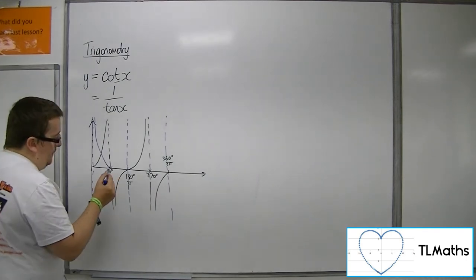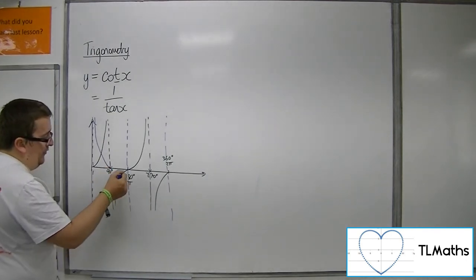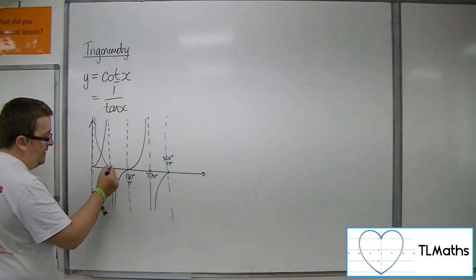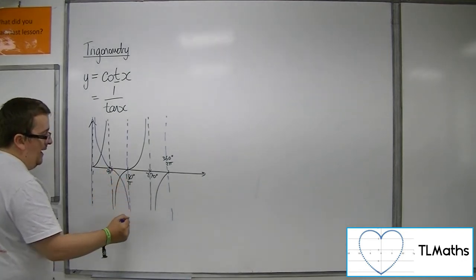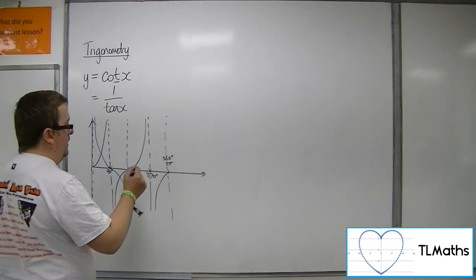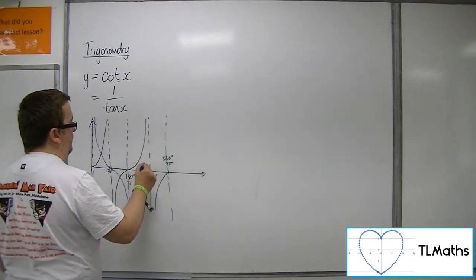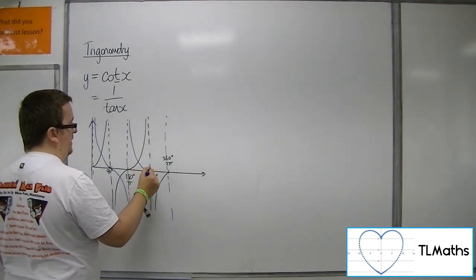And then, because tan is negative between 90 and 180, cot must be negative and approach the asymptote. So in a likewise move, the curve must look like this.